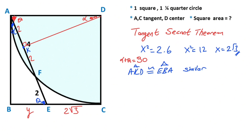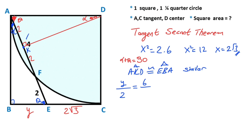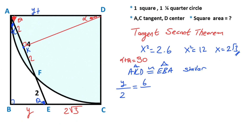Applying the similarity theorem for the triangles: y, which is opposite alpha, over two, which is also opposite alpha, must equal six, which is opposite the 90-degree angle, over this length — which is y plus two root three. So we get: y over two equals six over y plus two root three.